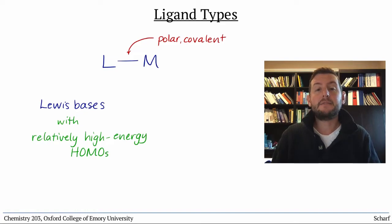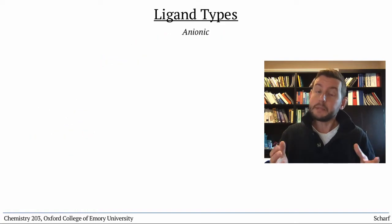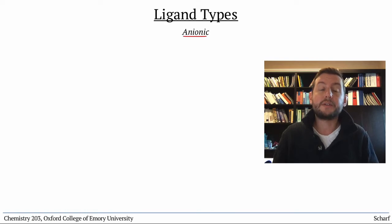Ligands come in many different types. Some ligands are anions when they're not bound to a transition metal, while others are neutral molecules on their own. We call ligands that are anionic when they're not bound to a metal X-type ligands.